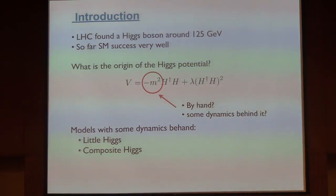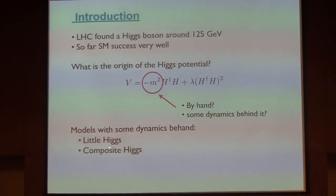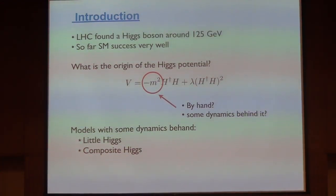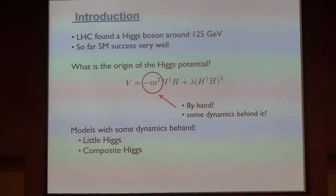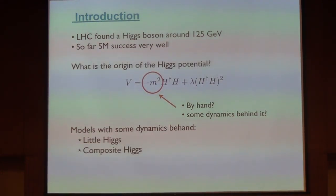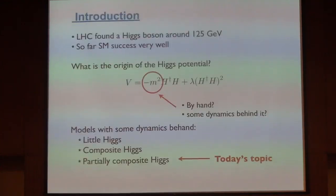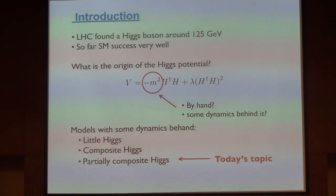Actually, there are some models with dynamics behind the Higgs potential. For example, the little Higgs model or the composite Higgs model. In these models, there are some dynamics, and the Higgs is generated dynamically as a pseudo-Goldstone boson. The Higgs potential is generated through the Coleman-Weinberg mechanism. So in these models, the Higgs boson is a completely composite object.